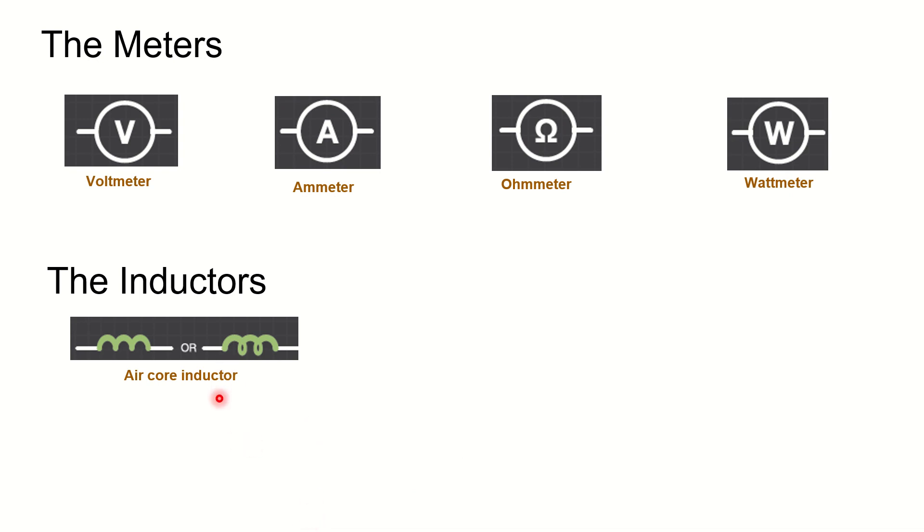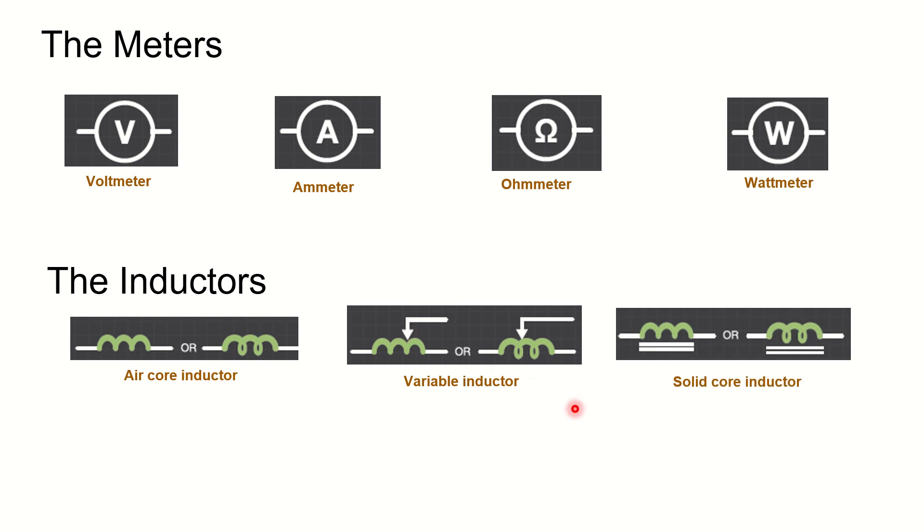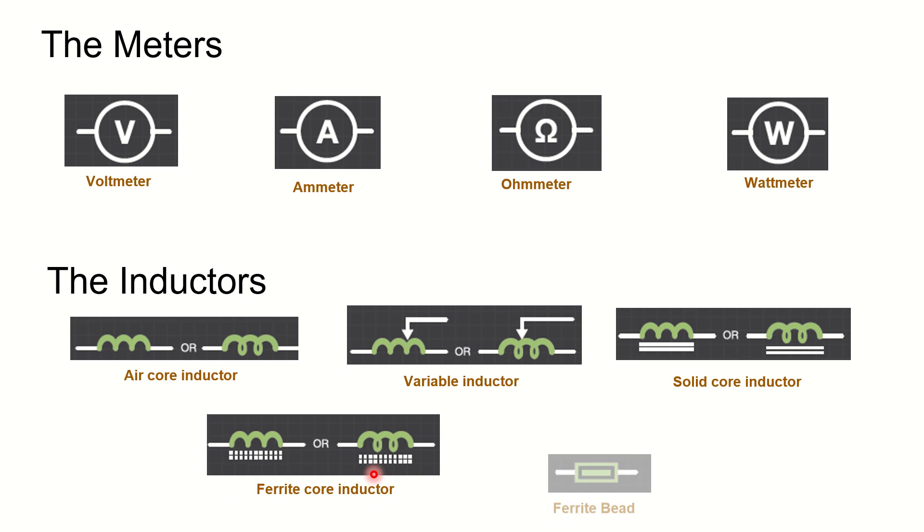The next one we need to go through is inductors. We have got the air core inductors first. The second one is variable inductor - you have got a line over there. And the third one is solid core inductor - you can see that we have got two lines below the coil. Ferrite core inductor - you can see the way it is represented. And finally it is ferrite bead. These are all the types of inductors that we normally get in the interview or the discussions.